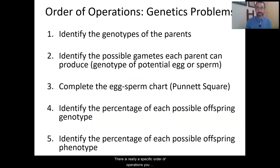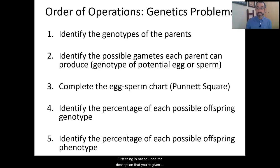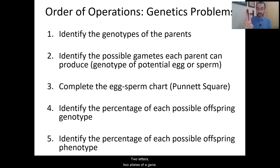There is a specific order of operations you should follow whenever you're approaching these genetics problems. First, based upon the description you're given, you should be able to identify the genotypes of the parents. Remember that's a pair of alleles — two letters, two alleles of a gene.